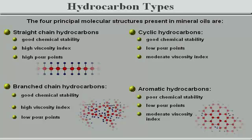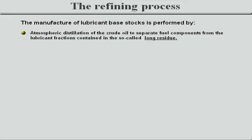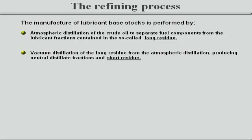In practice, the composition of a mineral oil is extremely complex — the larger molecules usually including two or more of the above molecular structures joined together in an infinite variety of configurations. The manufacture of lubricant-based stocks is performed by atmospheric distillation of the crude oil to separate fuel components, such as naphtha, kerosene and gas oil, from the lubricant fractions contained in the so-called long residue; followed by vacuum distillation of the long residue, producing neutral distillate fractions and short residue. Vacuum distillation is used to avoid thermal cracking of the long residue.